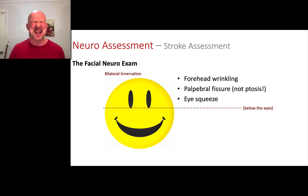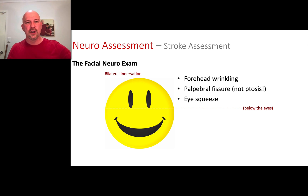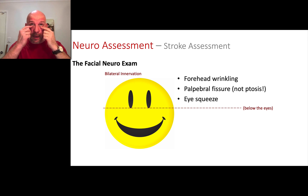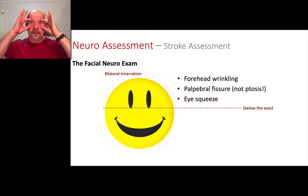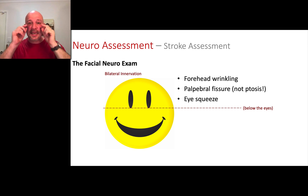The other thing we're going to look for is something called the palpebral fissure — I always call it the PF. The palpebral fissure is the distance from the bottom of the eyelid to the top of the eyelid: how much of your eye you can see. Right now I've got a really wide PF, and now a very narrow PF. What we look for is to see that the PF is the same on both sides.